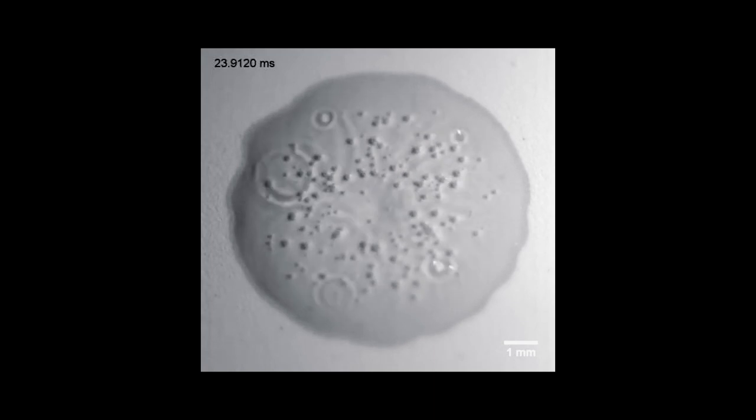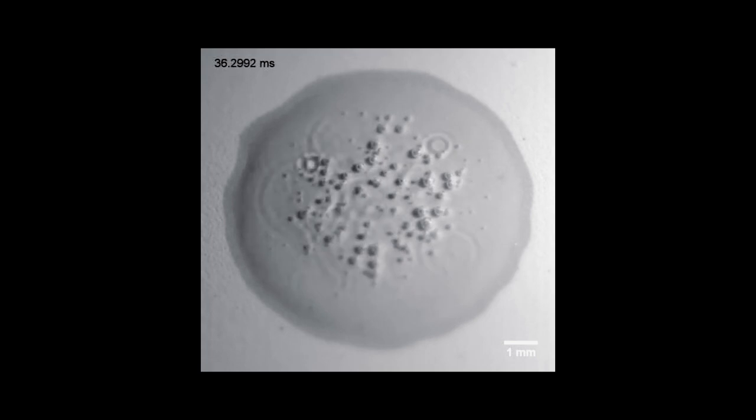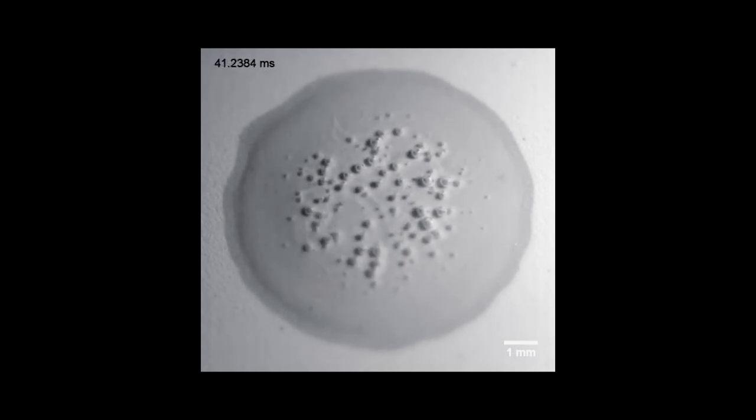When raindrops fall and hit dry soil, bubbles form at the surface. As these bubbles rise up and burst, they release a spray of mist, or aerosols, into the air.